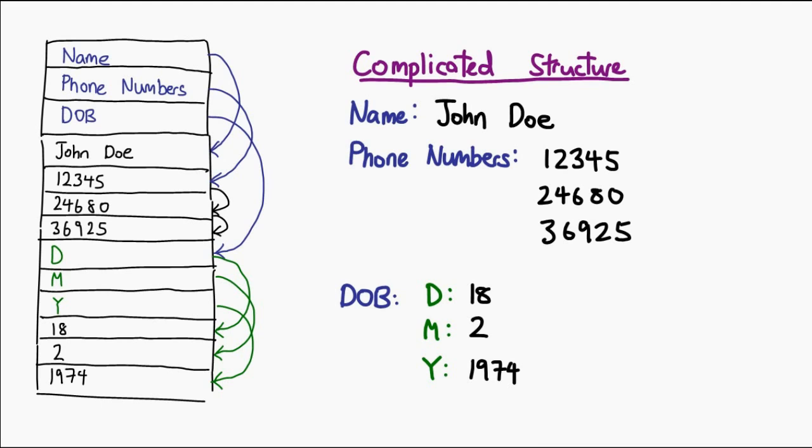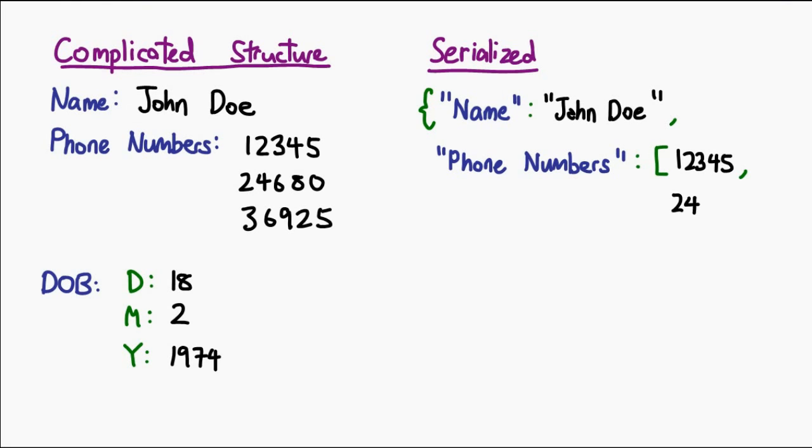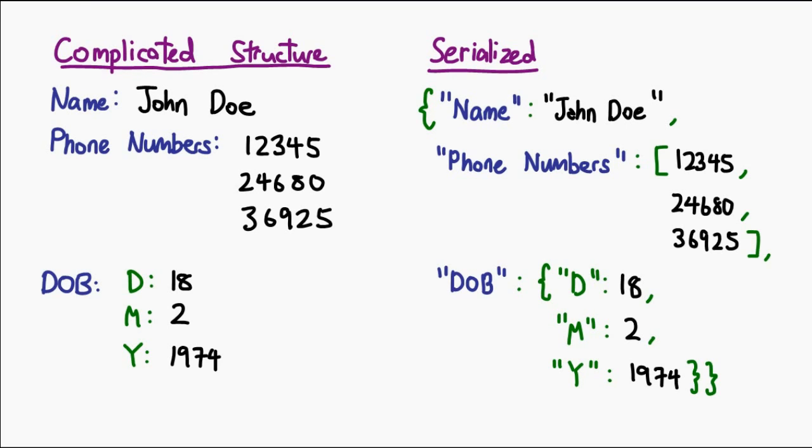I'm now going to flatten this all out into a single string by simply reading the structure from top to bottom. Every time there is a nested structure, I denote it with additional brackets. The square brackets denote an array, which is a simple list of items, whereas the curly braces denote a dictionary, where all entries are named. In fact, the syntax I'm using here is a formal syntax called JSON. More on this later in the episode.